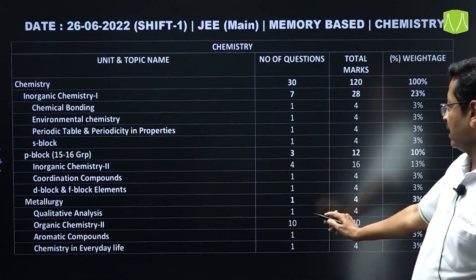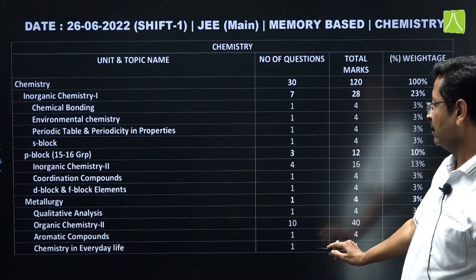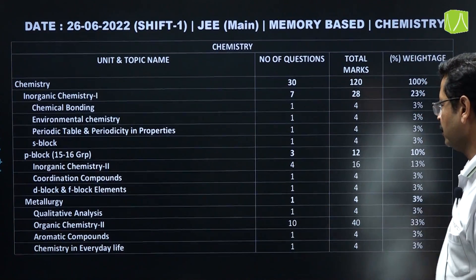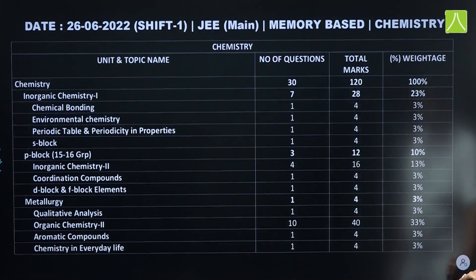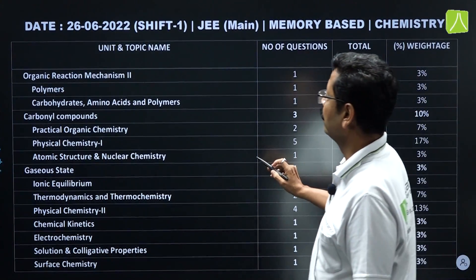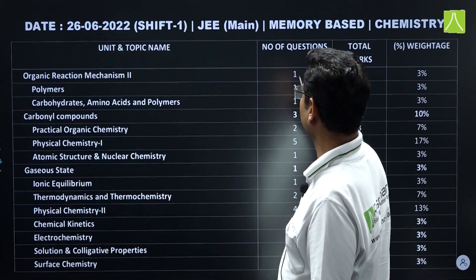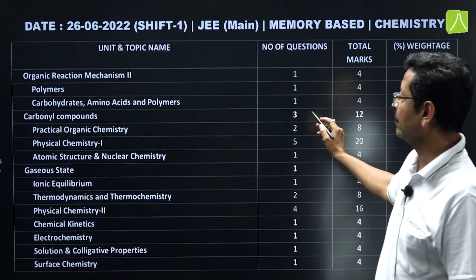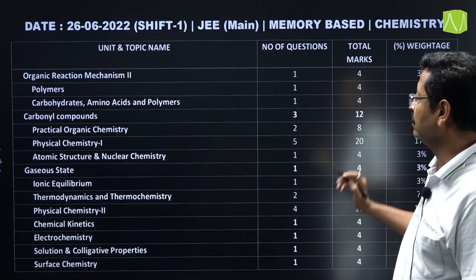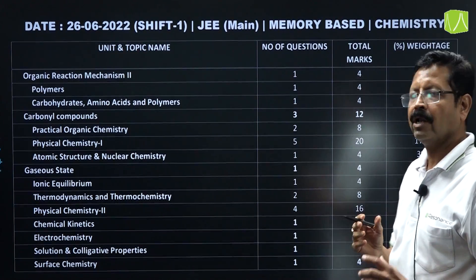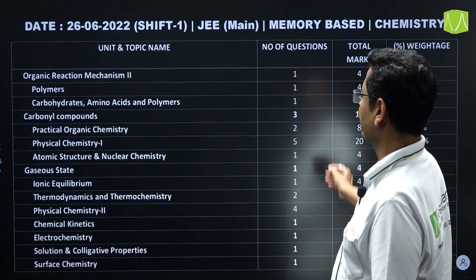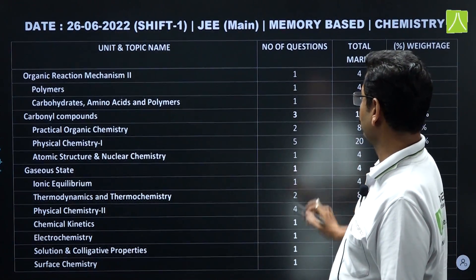From organic chemistry, 10 questions total: aromatic compounds, chemistry in everyday life, NCERT topics, organic reaction mechanism — 2, polymers — 1, carbohydrates/amino acids/polymer — 1, carbonyl compounds — 3, practical organic chemistry — 2.